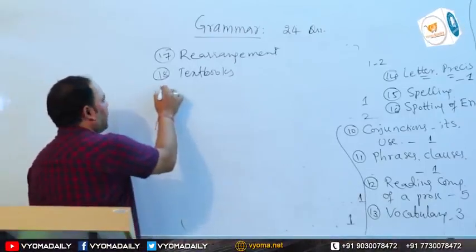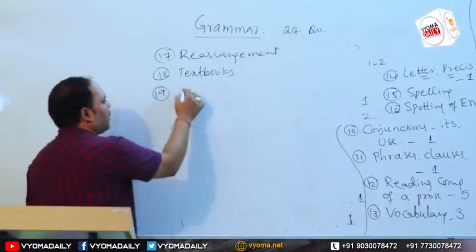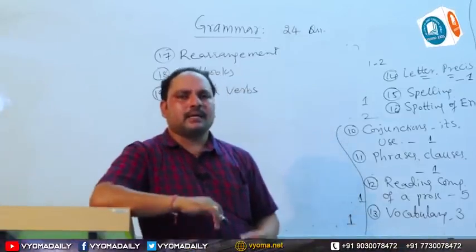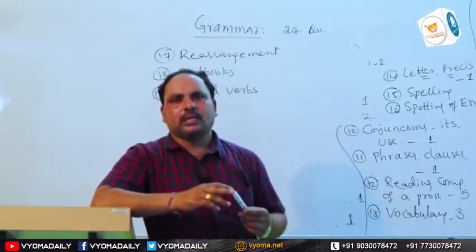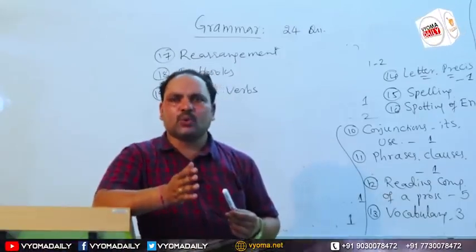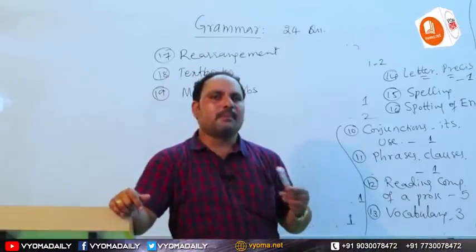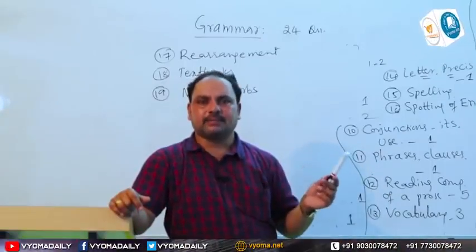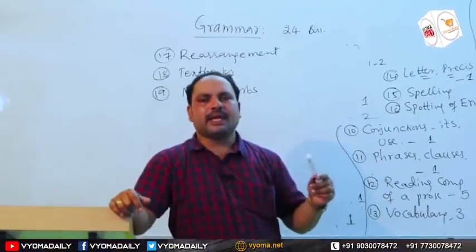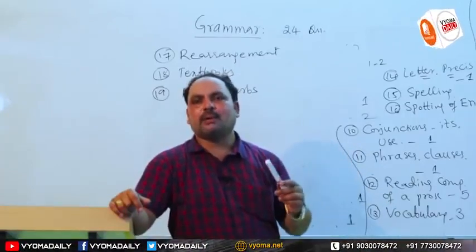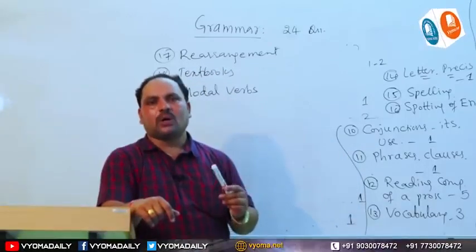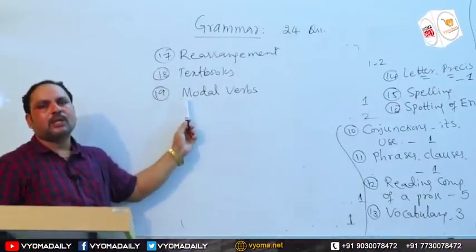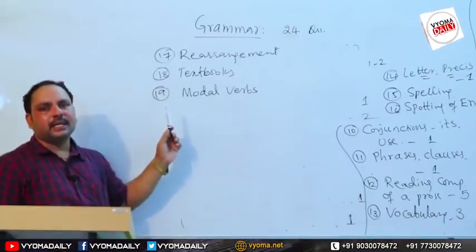The nineteenth topic is modal verbs — how to use them appropriately. Modals include will, would, shall, should, can, could, may, might, must, ought to, used to, need, and dare. You should understand the function of each modal verb. For example, 'It may rain tonight' — here 'may' indicates probability or possibility. Each modal verb should be studied in detail.